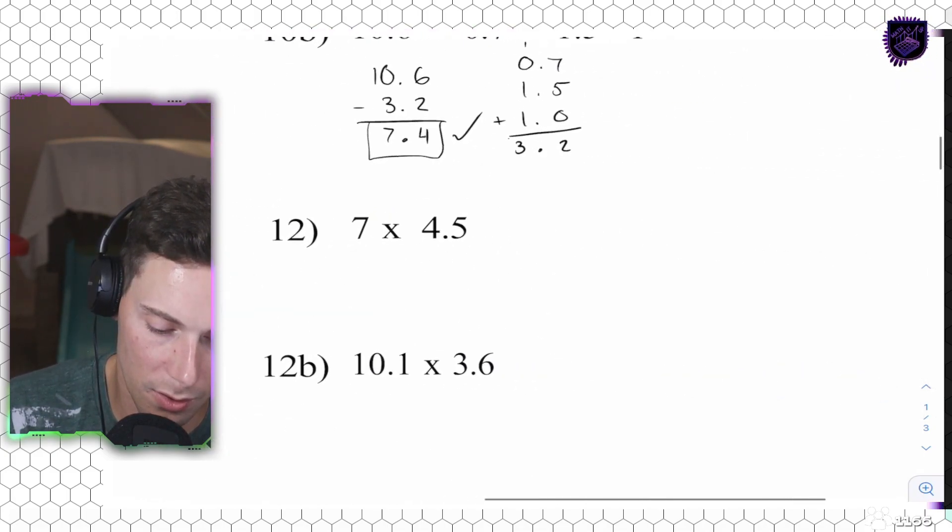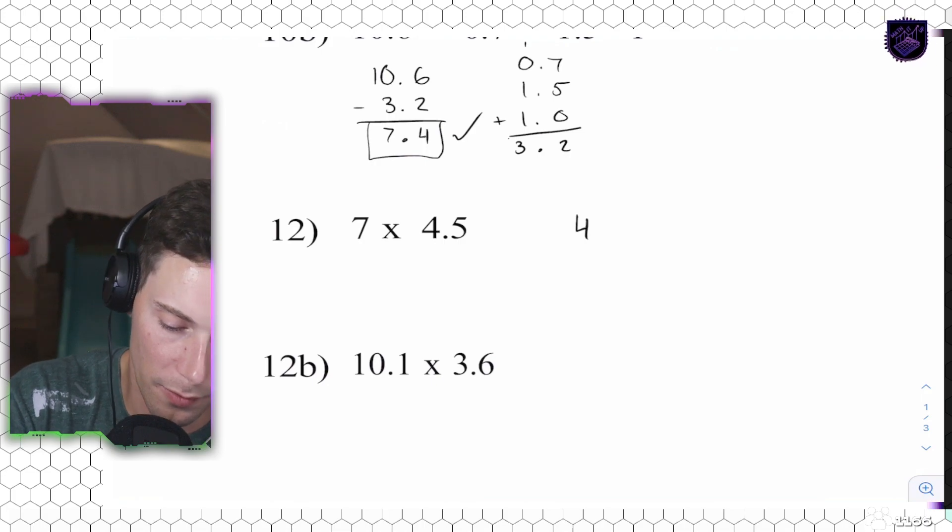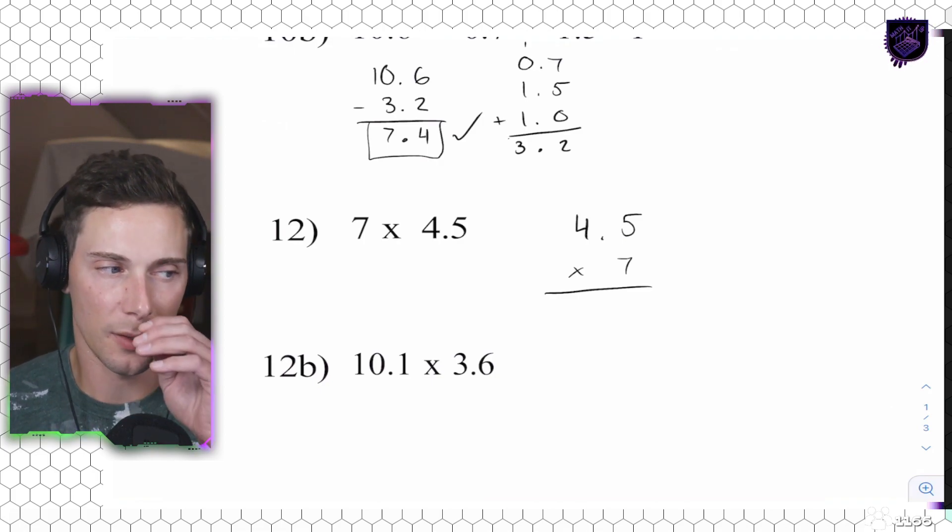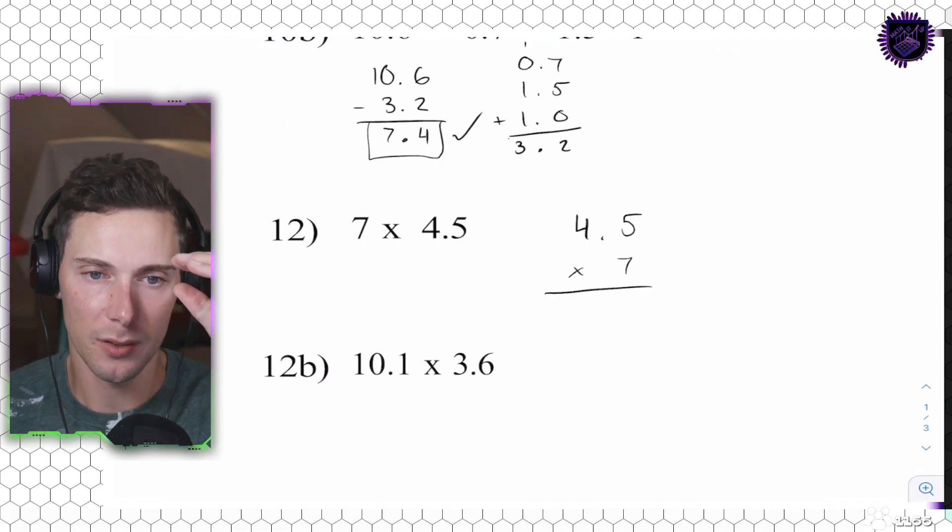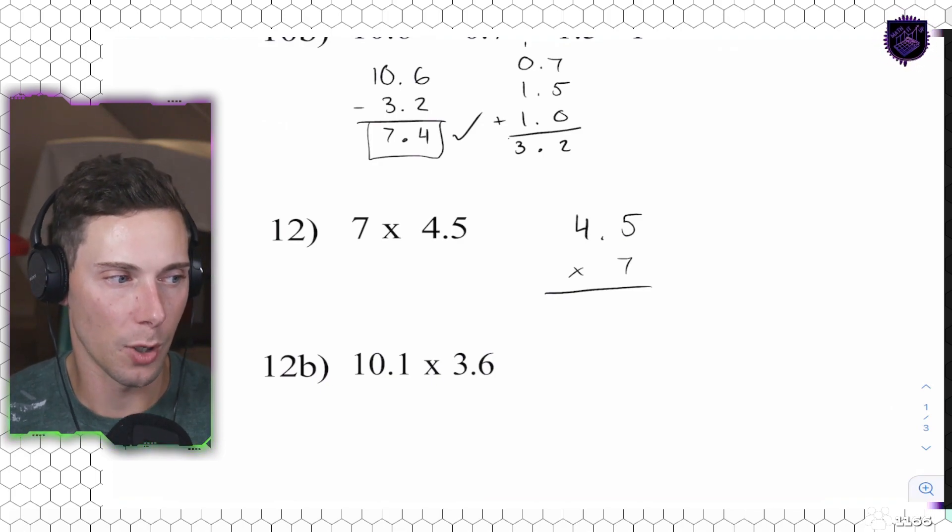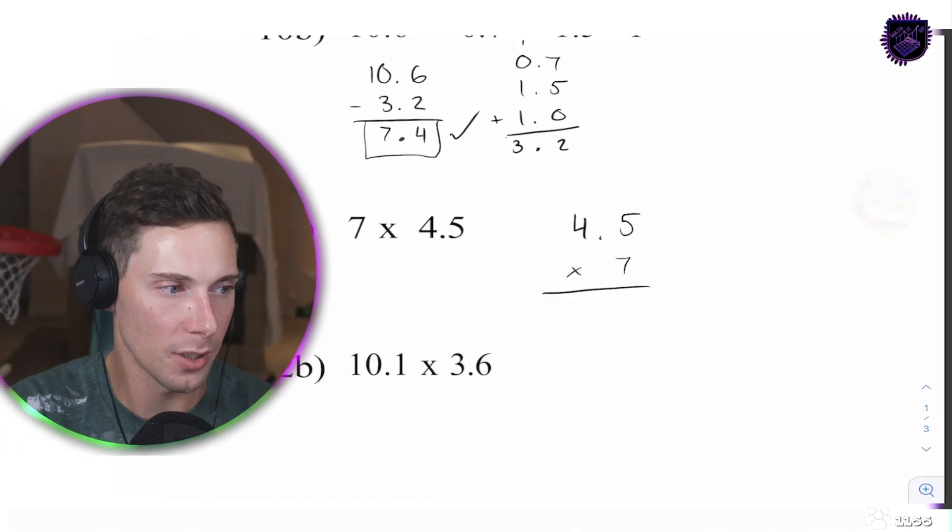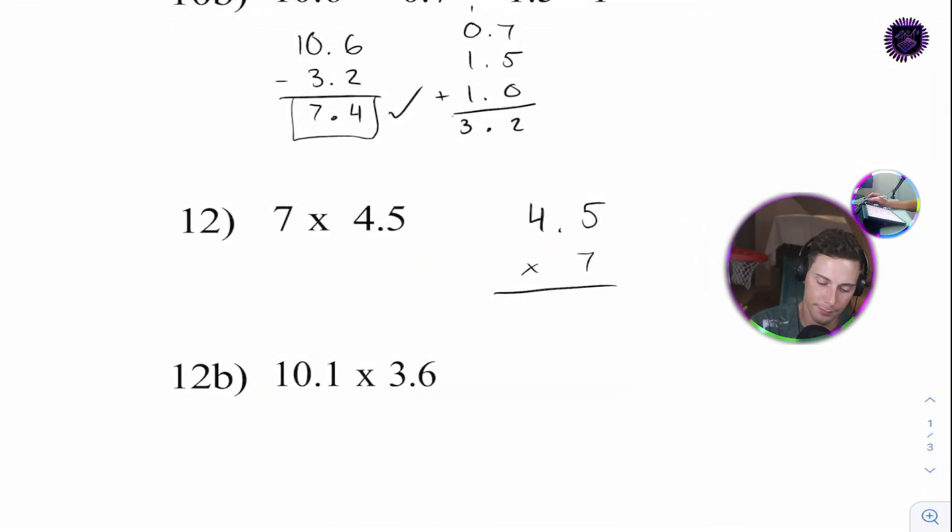54 plus 2 more, 56. There's one number for a place value, so we're going to move our decimal point right there. 56.4. Again, if you're questioning, you drop down to question number 11. 56.4. There it is, 56.4. Okay. Question 12.